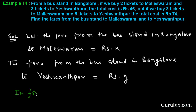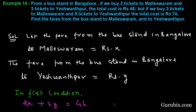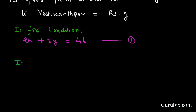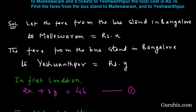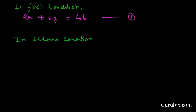According to the question, in the first condition, if we buy two tickets to Maleshwaram — this means 2X — and three tickets to Yashwanthpur — this means 3Y — the total cost is rupees 46. So 2X + 3Y = 46 is equation number one. In the second condition, three tickets to Maleshwaram and five tickets to Yashwanthpur are purchased for rupees 74, giving us 3X + 5Y = 74 as equation number two.